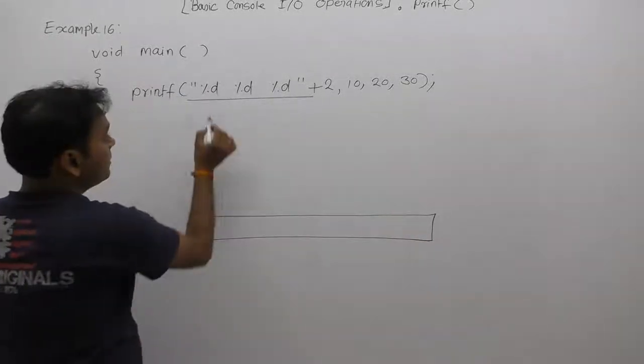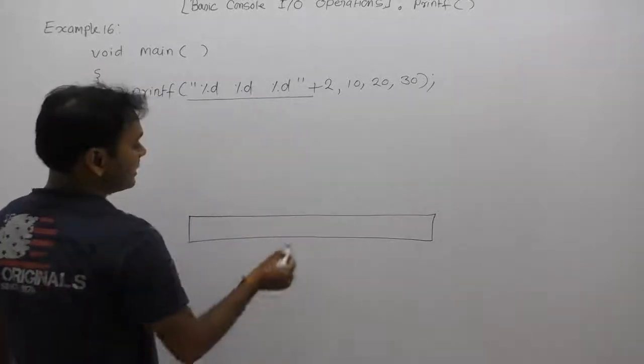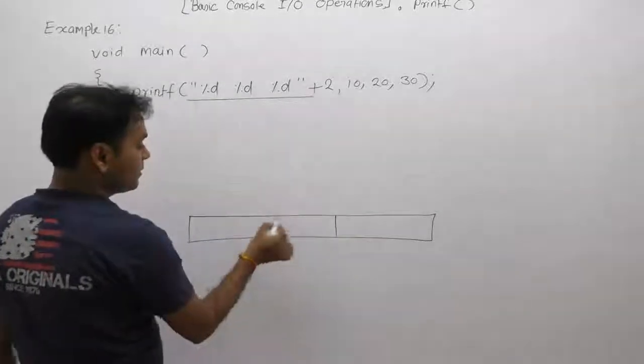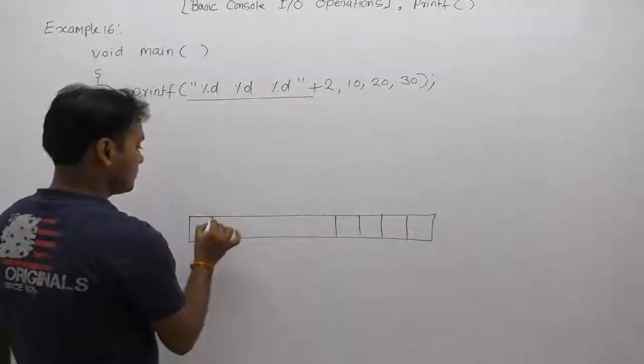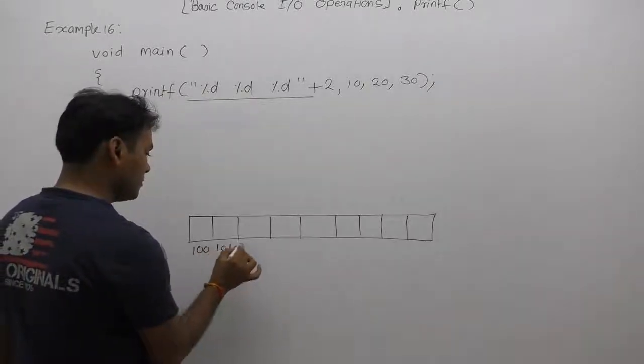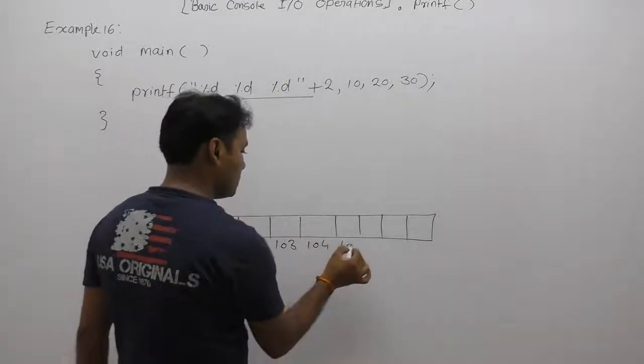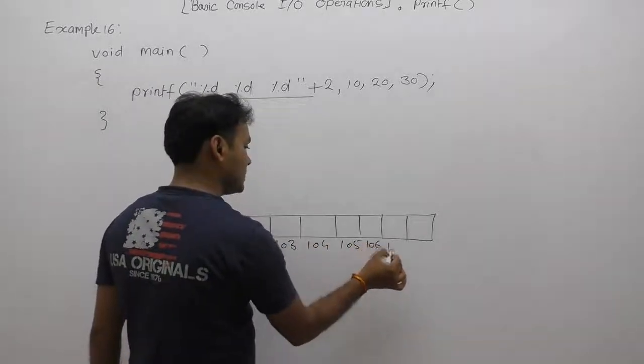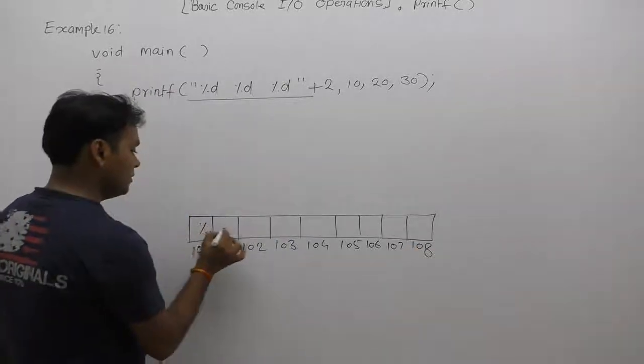This string will take nine bytes in memory. The addresses are 100, 101, 102, 103, 104, 105, 106, 107, and finally 108. We are storing percent d space percent d space percent d and finally the null character.